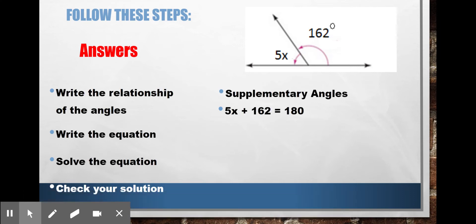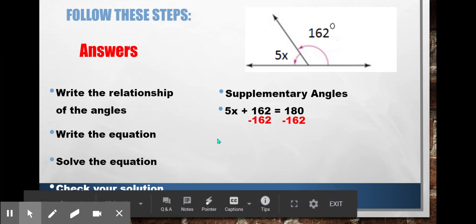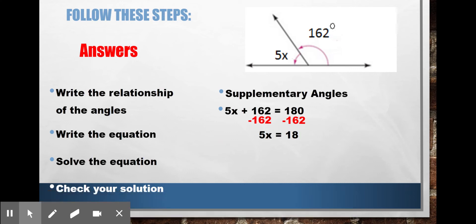So now when I solve this equation, this is a two-step equation, so I just need to use my two-step equation solving steps. I always subtract the constant from both sides first, and then that gives me 5x equals 18.